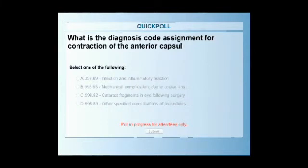Maybe repeat the question for everybody again. Sure. What is the diagnosis code assignment for contraction of the anterior capsule causing the intraocular lens implant to be displaced following extraction of a cataract? Okay. So 996.69 is for infection and inflammatory reaction. I was trying to make that one word. B was for mechanical complication due to ocular lens prosthesis. C was for cataract fragments in eye following cataract surgery and D, other specified complications of procedures.